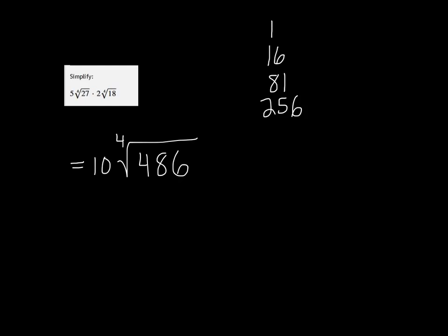5 to the 4th power is 625, and we don't need to go any further because that's already larger than the number we have to work with.